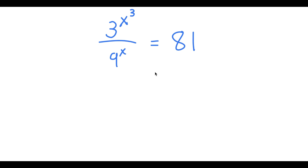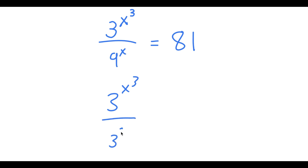In this problem, I have 3 to the power of x³ over 9 to the power of x, is equal to 81. So I'm going to first write 9 to the power of x as 3 squared to the power of x, and we write 81 as 3 to the power of 4.